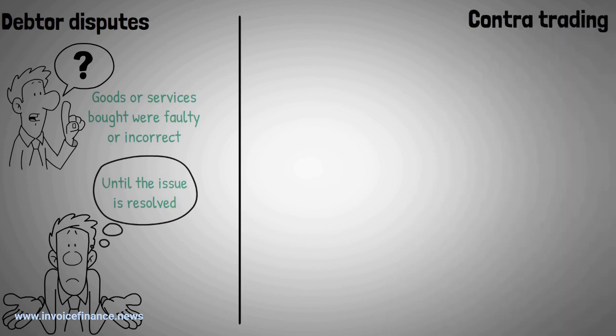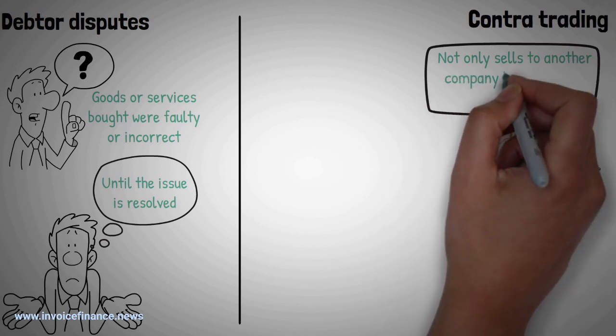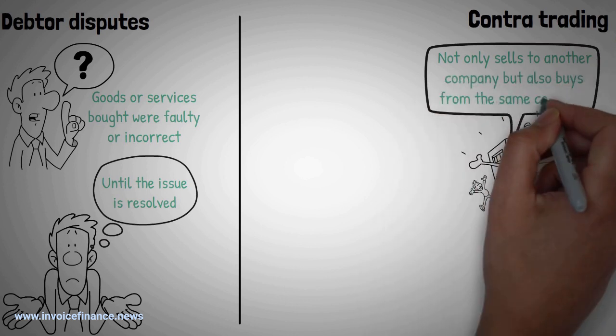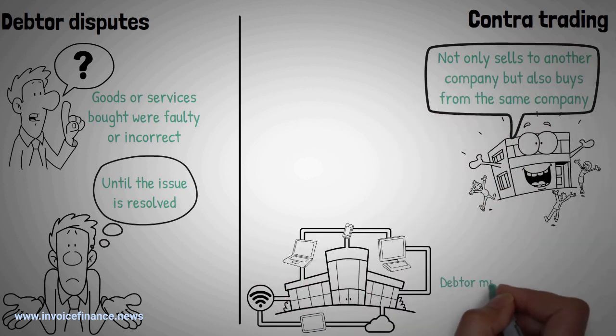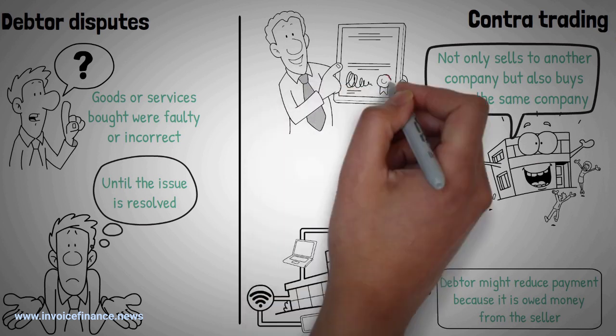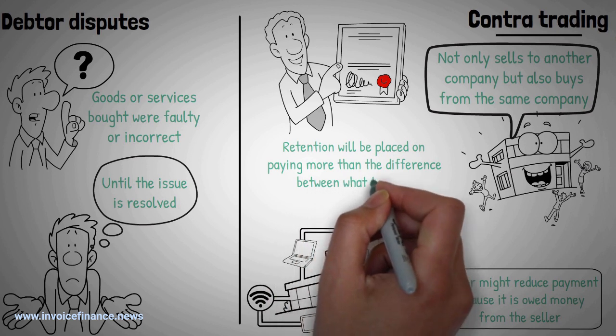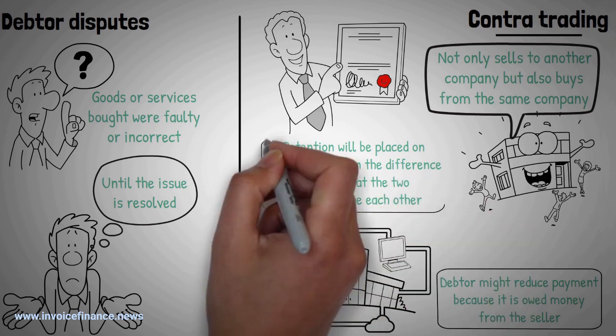Contra-trading. This refers to when a company not only sells to another company, but also buys from the same company. Factoring firms are reluctant to buy invoices where the debtor might reduce payment because it is owed money from the seller. If an invoice is prepaid from a company involved in contra-trading, then usually a retention will be placed on paying more than the difference between what the two companies owe each other.